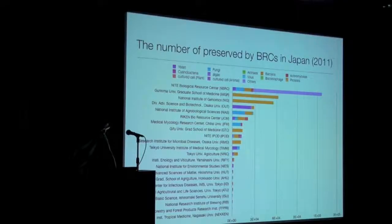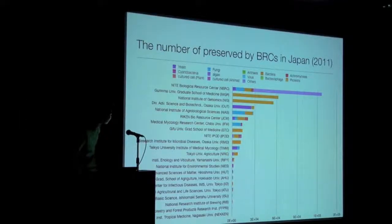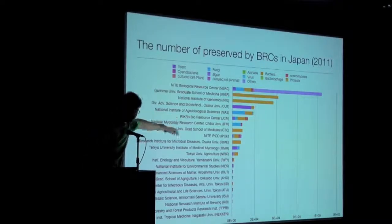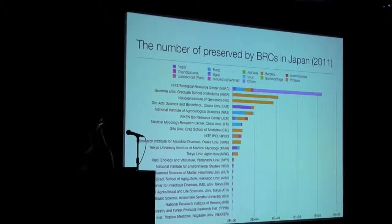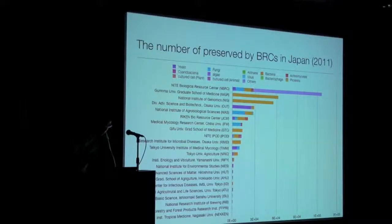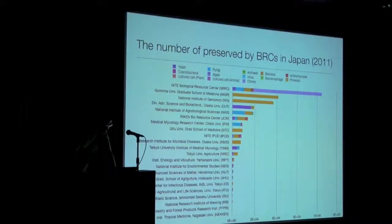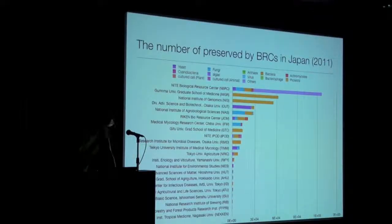We also have a good collaboration with WICEN, the Japan Collection of Microorganisms, or JCM. They kindly provided us organizational and metadata information of cultures and strains which they are maintaining. So at the start of our project, we have started to create RDF for such information.